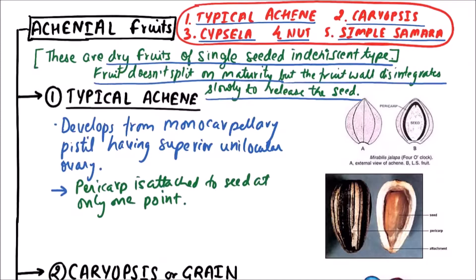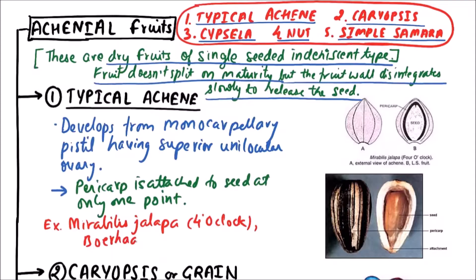Examples of typical achene include Mirabilis jalapa, which is also known as the four o'clock plant, Boerhaavia, Cosmos, etc. Here we can observe that the fruit has a seed attached to the fruit wall at a single point — this is the point of attachment, this is the single seed, and this is the outer pericarp. Here is the point of attachment in Mirabilis jalapa.